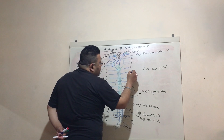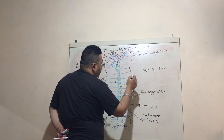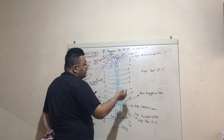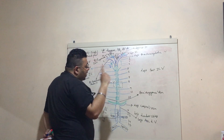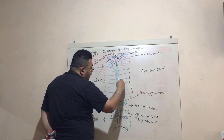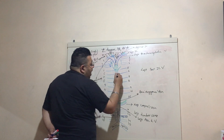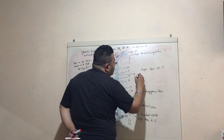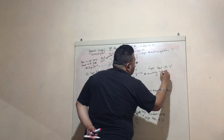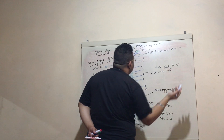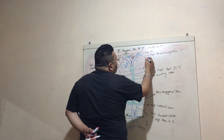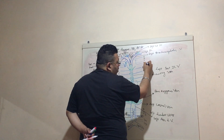The 5th, 6th, 7th, and 8th left posterior intercostal veins drain into a single structure, which then drains into the azygous vein. This single structure is known as the accessory hemi-azygous vein.